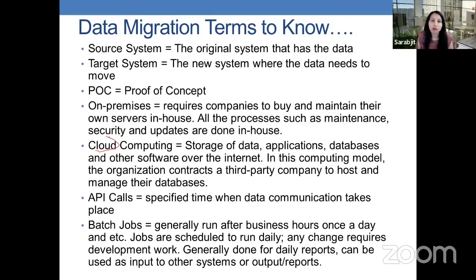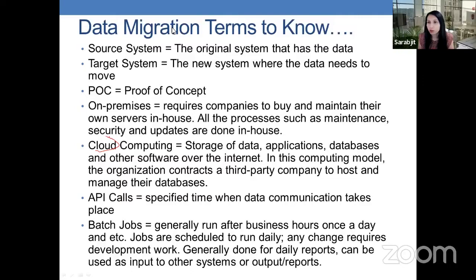On-premises means that it requires companies to buy and maintain their own servers in-house. All processes such as maintenance, security, and upgrades are done in-house. In our Amazon example, if they had on-site servers, this would be known as on-prem. Cloud computing is when we have storage of data, applications, databases, and other software over the internet. If Amazon were to buy their own servers and maintain them at their headquarters or in a data warehouse, that would be on-prem. If they're outsourcing their storage of databases, that's called cloud computing.